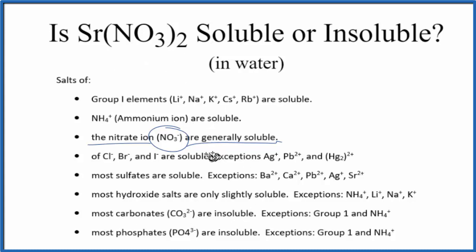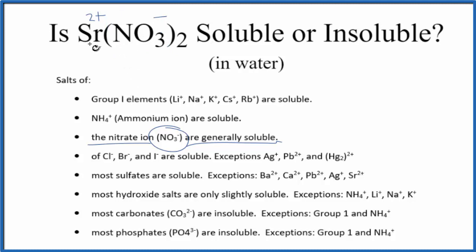Strontium is in group 2 on the periodic table, so it has a 2+ ionic charge. The nitrate ion is always 1-minus. So when you put strontium nitrate in water, it'll dissolve and dissociate into its ions. You'll have Sr²⁺, which will be aqueous, and you'll have 2 nitrate ions, NO₃⁻, which will also be aqueous.